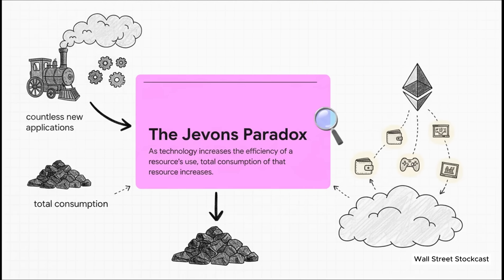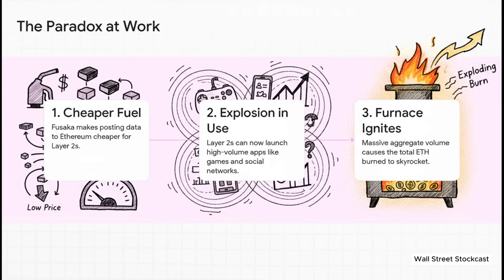And that principle? It's called the Jevons paradox. It's a bit counterintuitive, but it is incredibly powerful. The classic example is the steam engine. When you invent a more efficient engine that uses less coal, you don't end up burning less coal as a society. You end up burning way more coal. Because now steam power is so cheap you can use it for everything. Trains, factories, you name it. The explosion in demand completely swamps the efficiency gains. And this thesis argues the exact same thing is happening right now with Ethereum's block space.